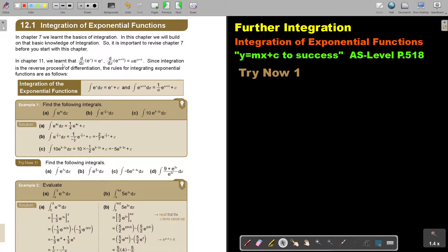In chapter 11, we learned that if I differentiate e to the power x, it stays e to the power x. But if I differentiate e to the power ax plus b, then it becomes a times e to the power ax plus b. So it's basically that value in front of x that I put in front or that I multiply with.